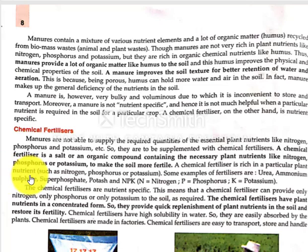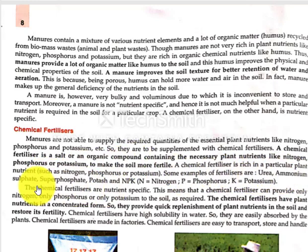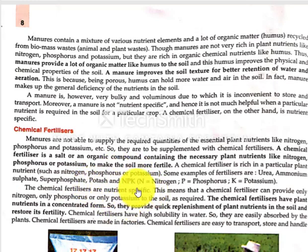If we need nitrogen, we use a nitrogen fertilizer. If we need phosphorus, we use a phosphorus fertilizer. Examples of chemical fertilizers include Urea, Ammonium Sulphate, Superphosphate, Potash, and NPK.